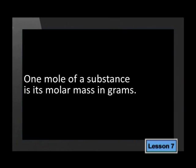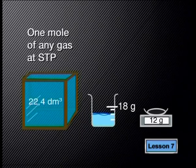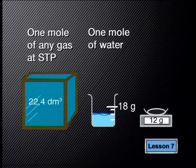Remember, one mole of a substance is its molar mass in grams. Using sophisticated scales and equipment and making sure that the temperature and pressure were at standard conditions, scientists discovered that one mole of any gas has a volume of 22.4 decimetres cubed. This means that this box, which has a volume of 22.4 decimetres cubed, would contain one mole of any gas at STP. I'm sure you'll agree that this is quite a large volume if you compare it to one mole of water, which is a liquid or one mole of carbon, which is a solid.